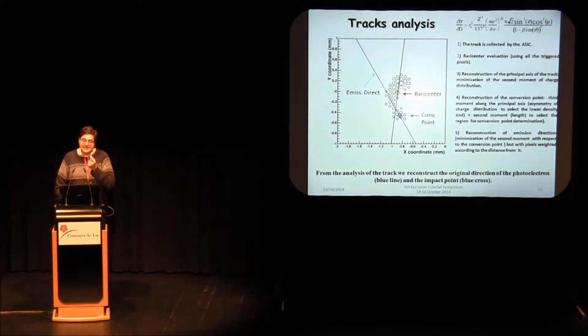In order to evaluate the conversion point, which is the point in which the photon interacts with the gas, and the emission direction that is actually the direction related to the polarization of the photon beam, we need to reconstruct a full modulation curve, so we need a lot of these emission directions. This is a real track. We collect the track, we evaluate the principal moments of the track, and from the principal moments of the track we derive the conversion point and emission direction.